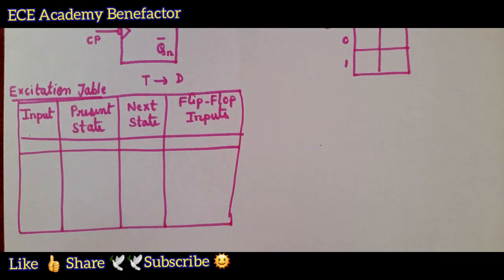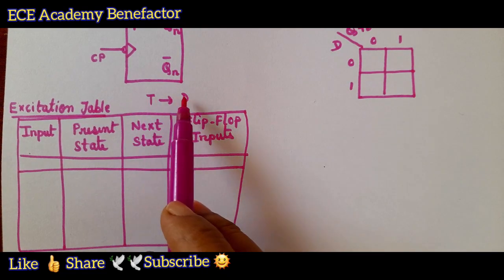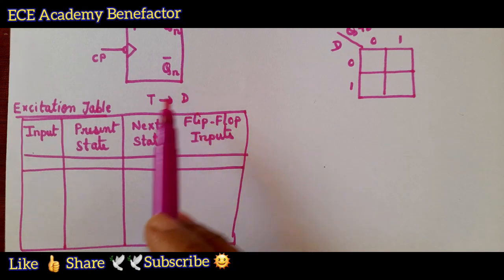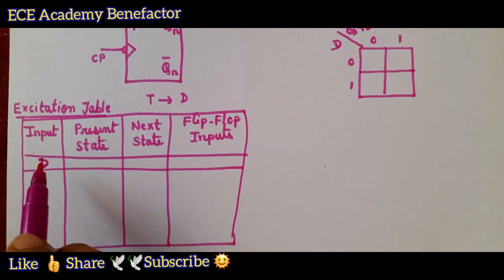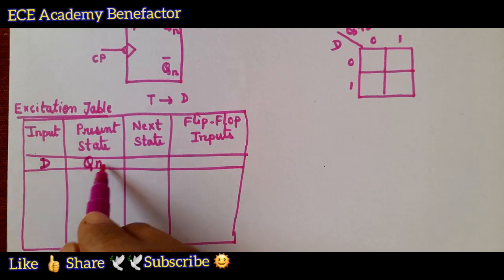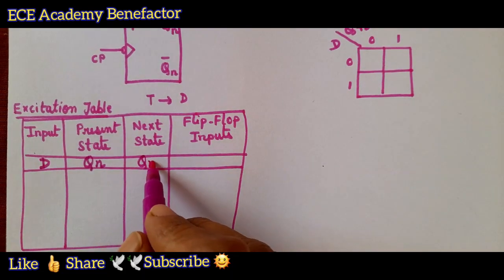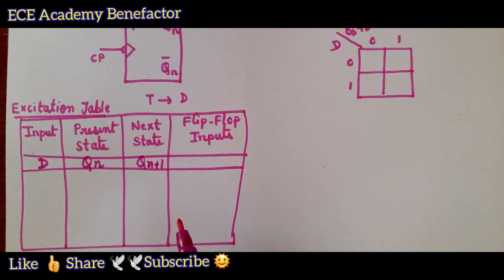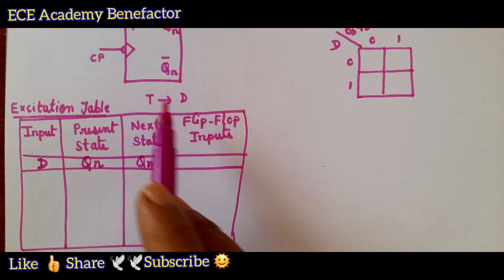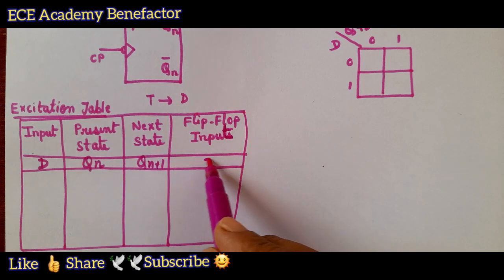Since we are converting T flip-flop to D, D becomes the input. So D is the input, present state is Q_n, next state is Q_n+1, and the flip-flop input is a single input — that is T.